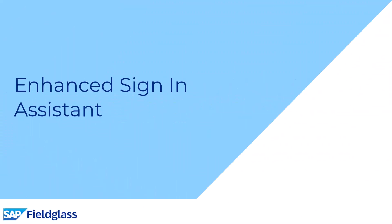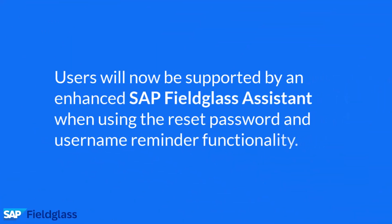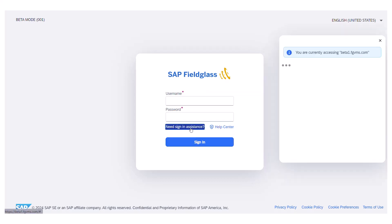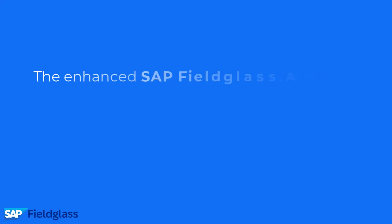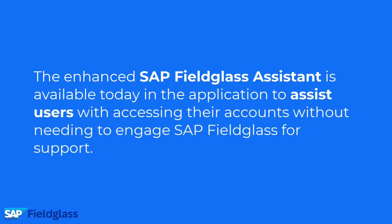Going on to the next innovation: Enhanced Sign-in Assistant. Users will now be supported by an Enhanced SAP Fieldglass Assistant when using the Reset Password and Username Reminder functionality. When logging into SAP Fieldglass, users can click 'Need Sign-in Assistance.' They will then be greeted with an updated SAP Fieldglass Assistant landing page, displaying the environment the user is trying to log into, as well as selectable options relating to the issue. The Enhanced SAP Fieldglass Assistant is available today to assist users with accessing their accounts without needing to engage SAP Fieldglass for support.